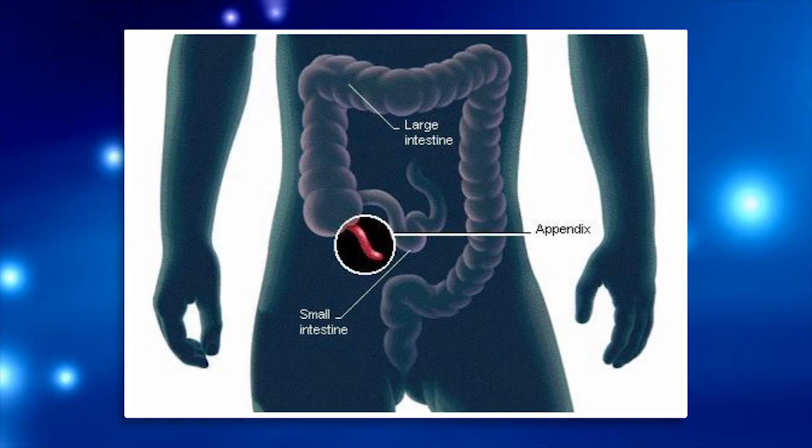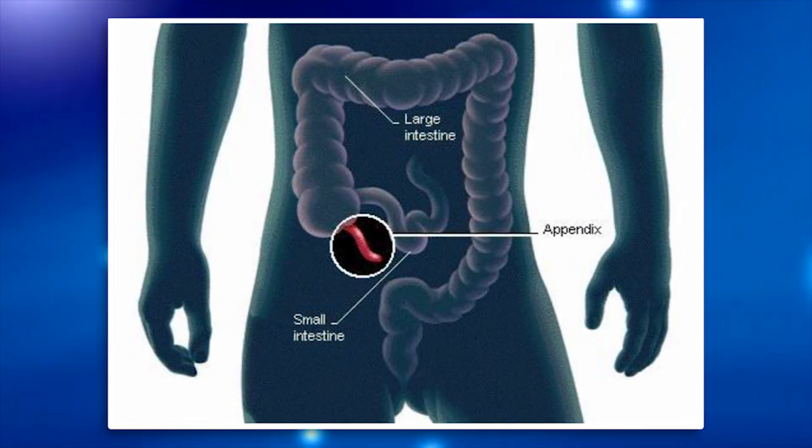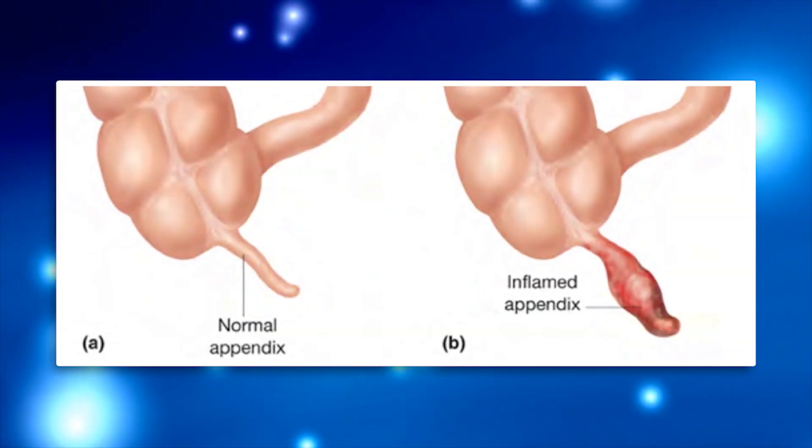If you want to know more about the appendix you can go to some of my other videos. The appendix is a tubular structure located on the right side of the abdomen, hanging kind of off the colon. What the appendix does, nobody really knows — we think maybe it had some immune function at some point, but most likely it doesn't do anything right now that we know of.